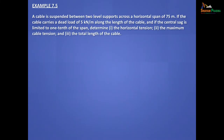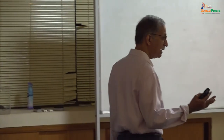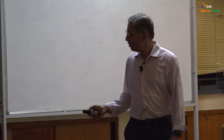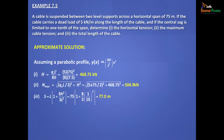So let's do a solution for a problem like this. A cable is suspended between two level supports along a horizontal span of 75 meters. The cable carries a dead load of 5 kN/m along the length of the cable, and if the central sag is limited to one-tenth of the span, determine the horizontal tension, the maximum cable tension, and the total length of the cable. First let's do what is easy — let's assume it's parabolic. We'll actually find out how much error you make. For parabolic, H = Q0L²/8H — you plug in the values.